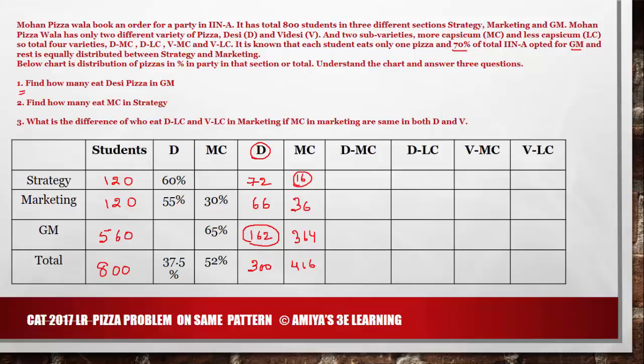Question 1: How many eat Desi Pizza in GM? The answer is 162. Question 2: How many eat MC in Strategy? The answer is 16.